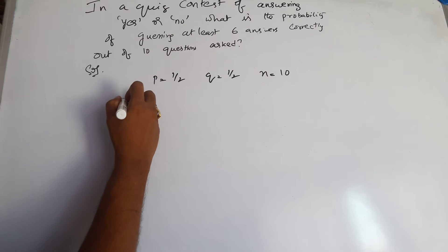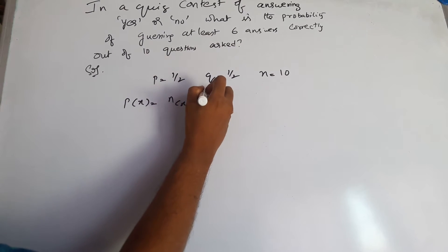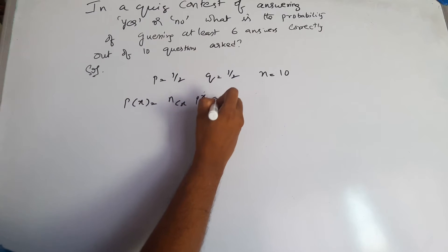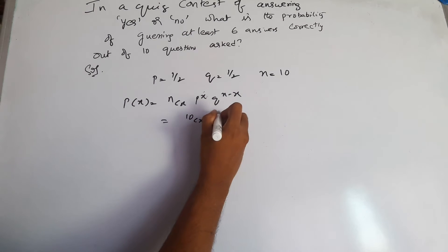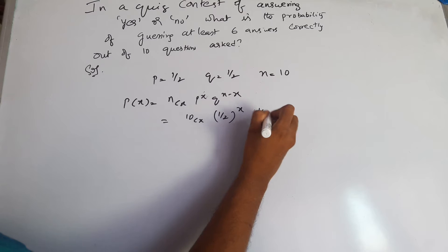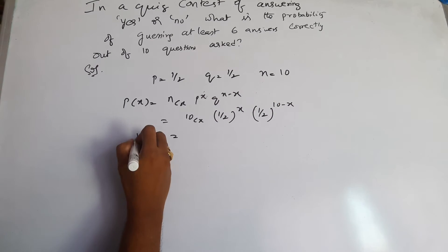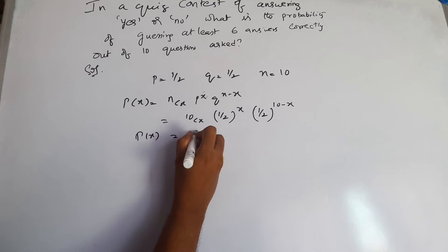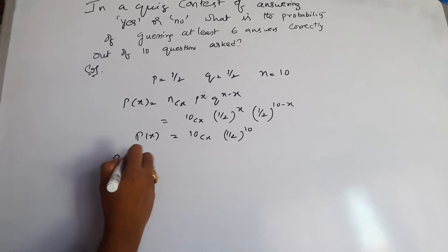We have P of X equals nCx times p to the power X times q to the power n minus X. So 10Cx times one-half to the power X times one-half to the power 10 minus X. This simplifies to P of X equals 10Cx times one-half to the power 10.